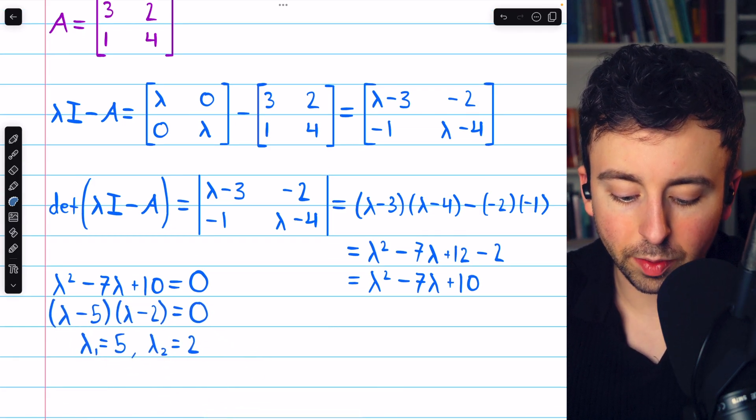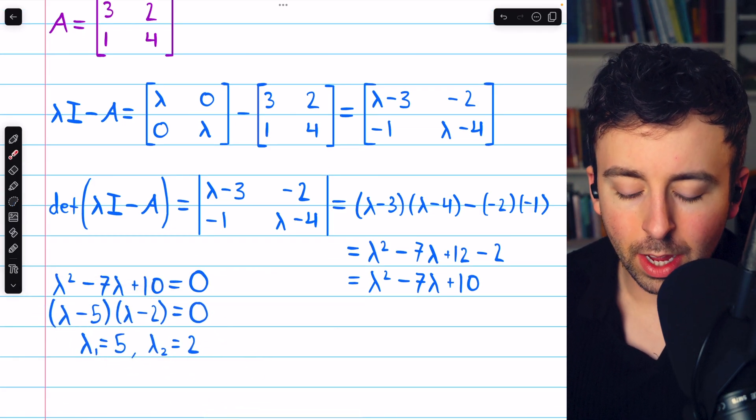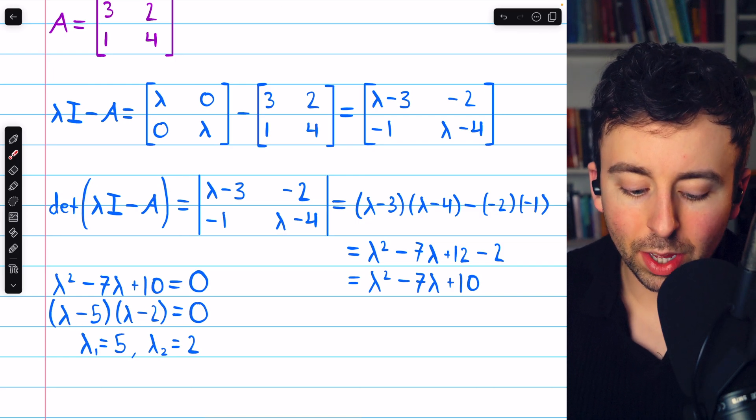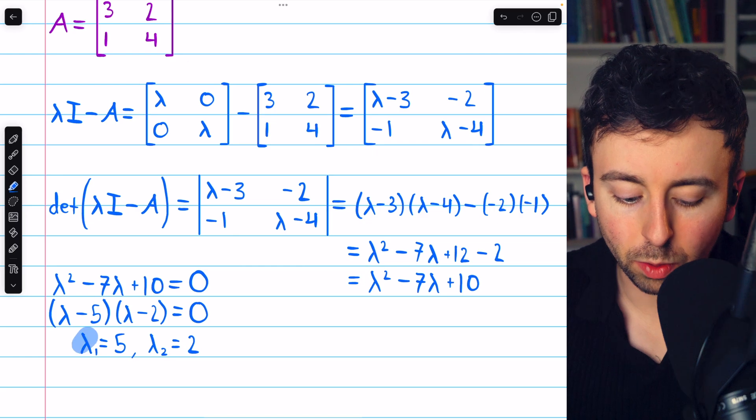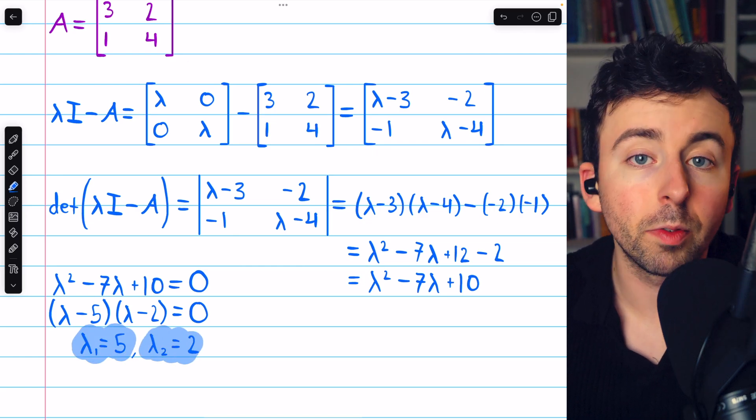That's pretty straightforward. We don't even need the quadratic formula here. So we end up using the zero product property with lambda one equals five and lambda two equals two. Those are the two eigenvalues of the matrix A.